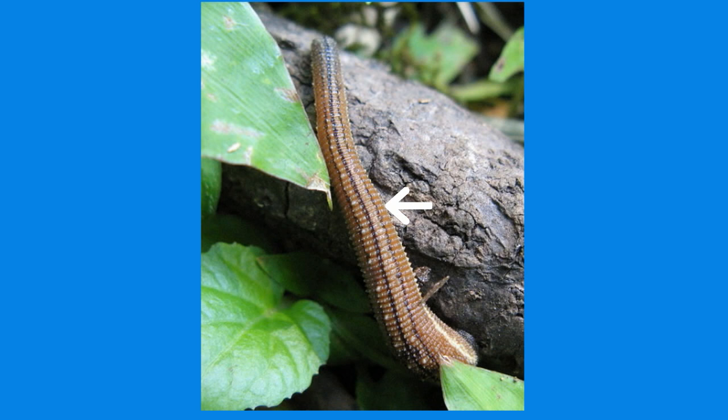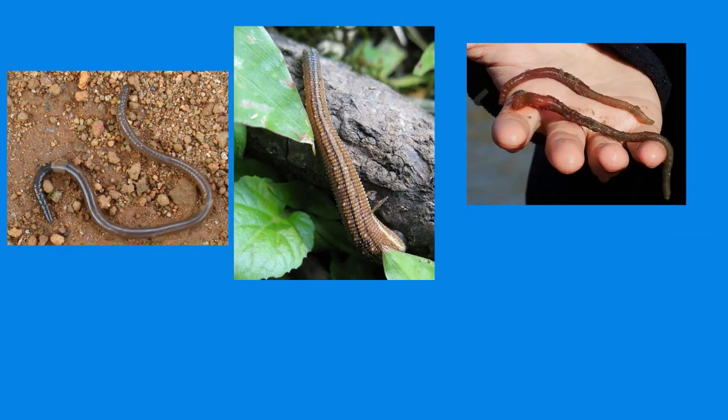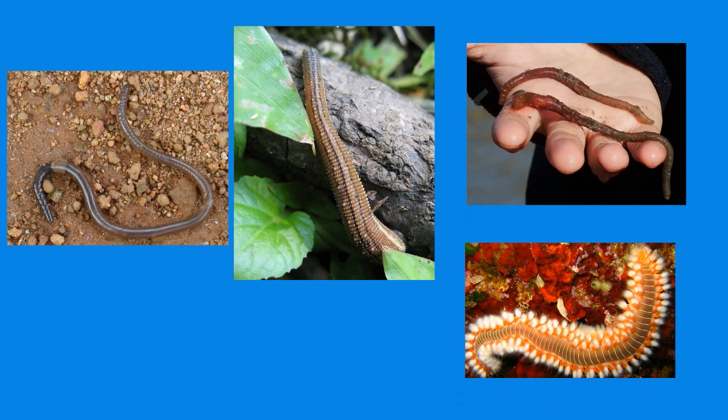Some common examples include the earthworm, leeches, clamworm, and fireworms. Here are a couple more characteristics of these worms.